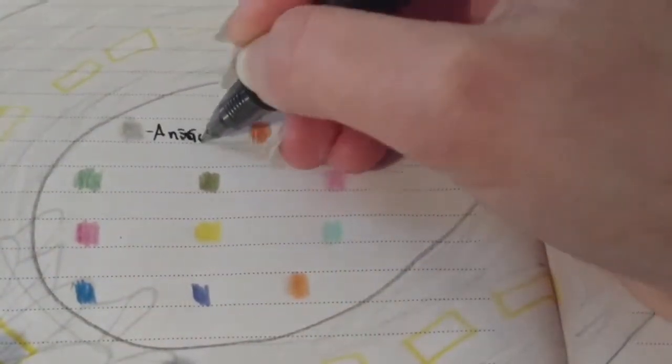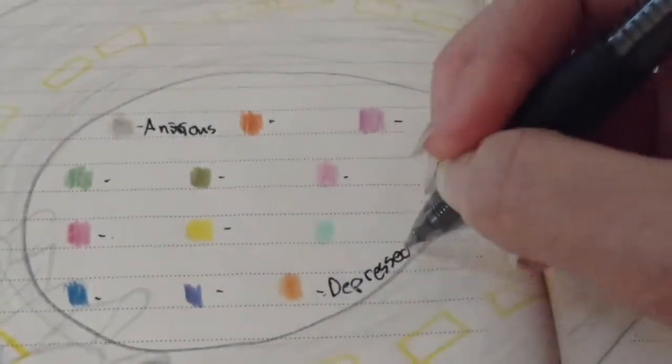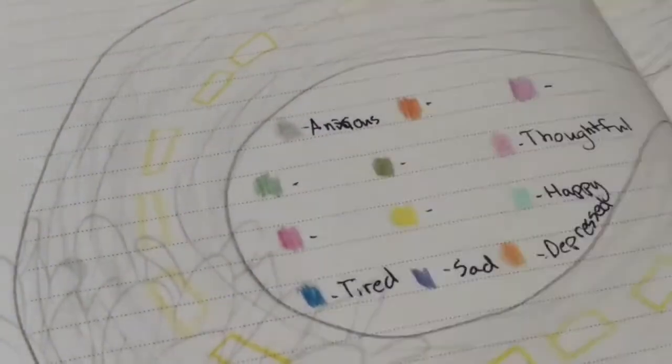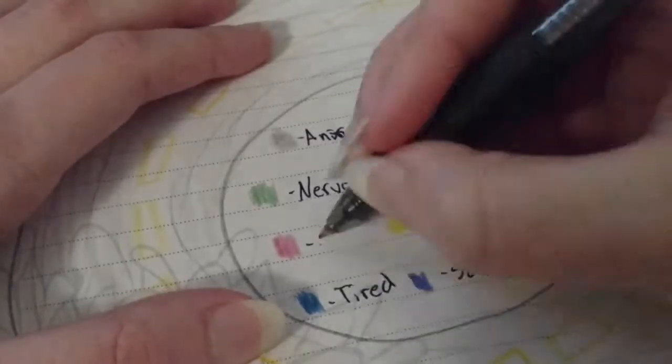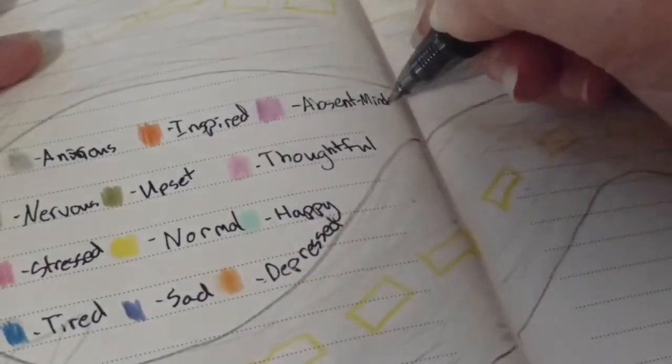Anyways I'll name off the 12 moods again. I have anxious and then I have depressed, happy, thoughtful, sad, tired, inspired, nervous, upset, stressed, normal, and absent-minded.